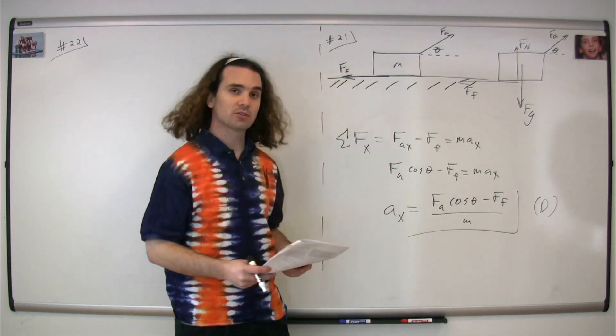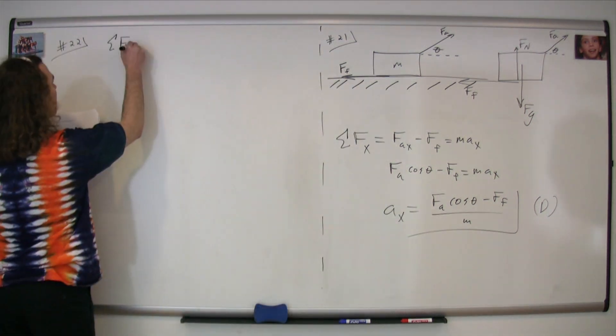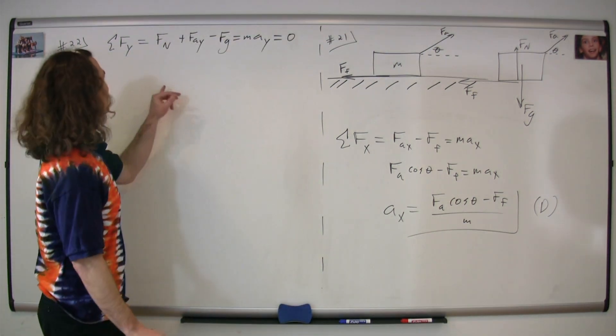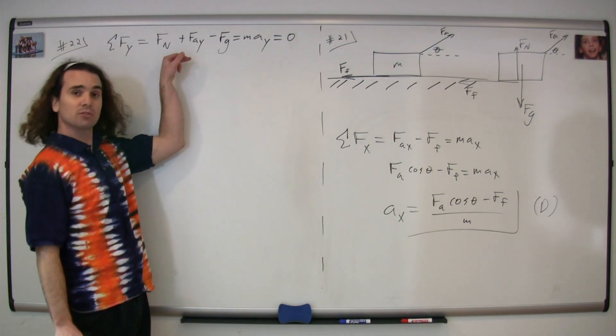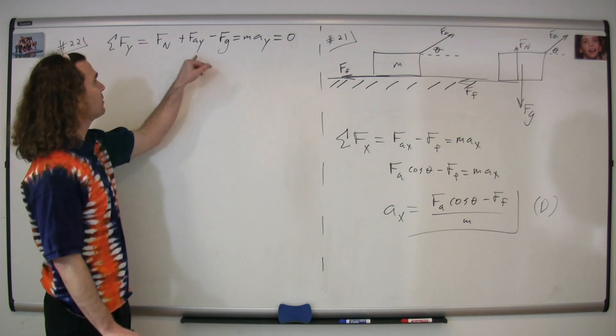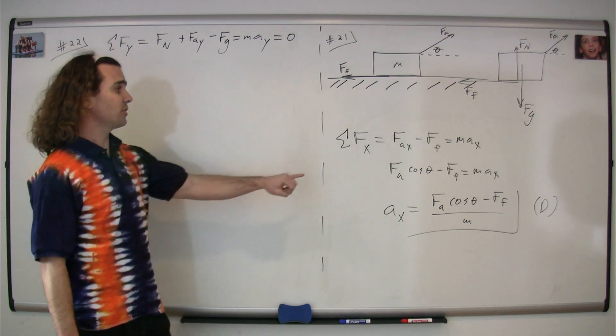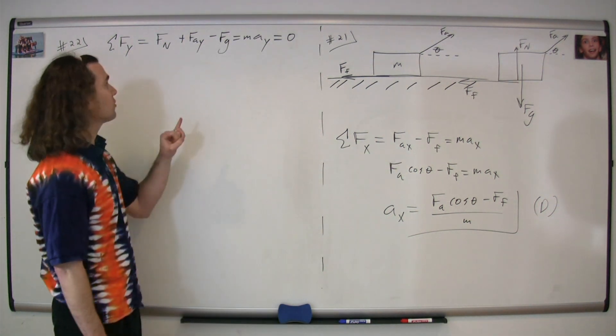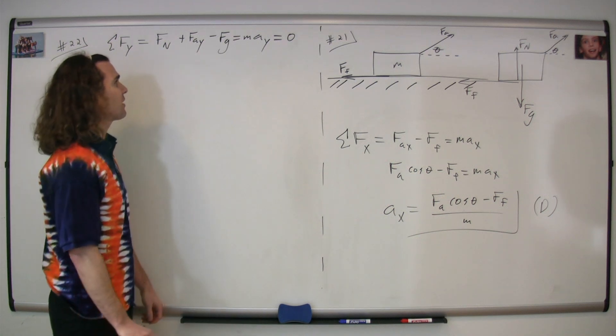So now we need to sum the forces in the y-direction. Summing the forces in the y-direction, we get that the net force in the y-direction equals the force normal, which is positive because it's up, plus the force applied in the y-direction, the other component of the force applied only in the y-direction, also up, so positive, minus the force of gravity.